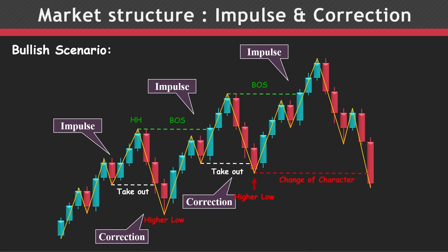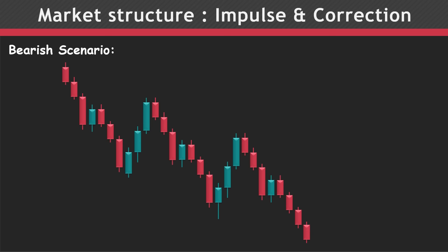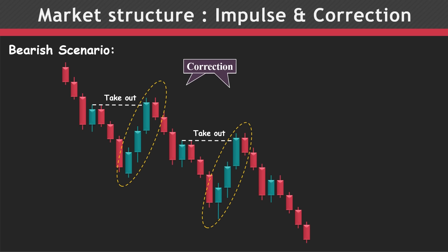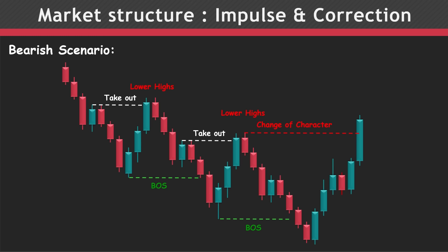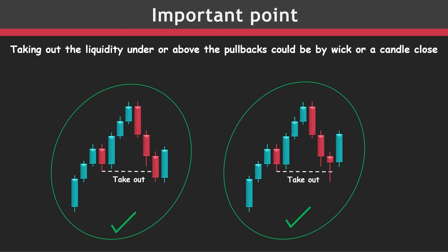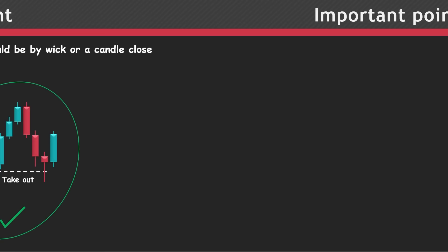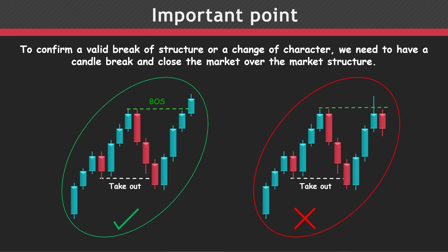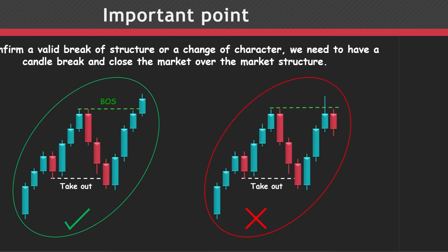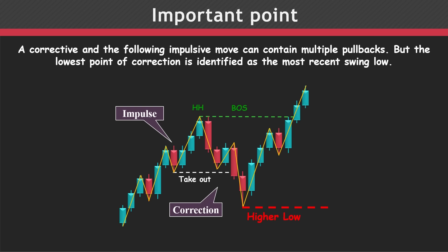The same concept is applied to the bearish scenario. Here we have impulsive and corrective moves in terms of candlestick. These moves are corrections in terms of market structure reading, since they have taken out the liquidity above the minor structures defining the lower highs. So, the change of character occurs if we get a break and close above this level. Taking out the liquidity under or above the pullbacks could be by wick or a candle close — both are valid. To confirm a valid break of structure or a change of character, we need a candle to break and close over the market structure. Wicking below or above the zone is not valid. A corrective and the following impulsive move can contain multiple pullbacks, but the lowest point of correction is identified as the most recent swing low.